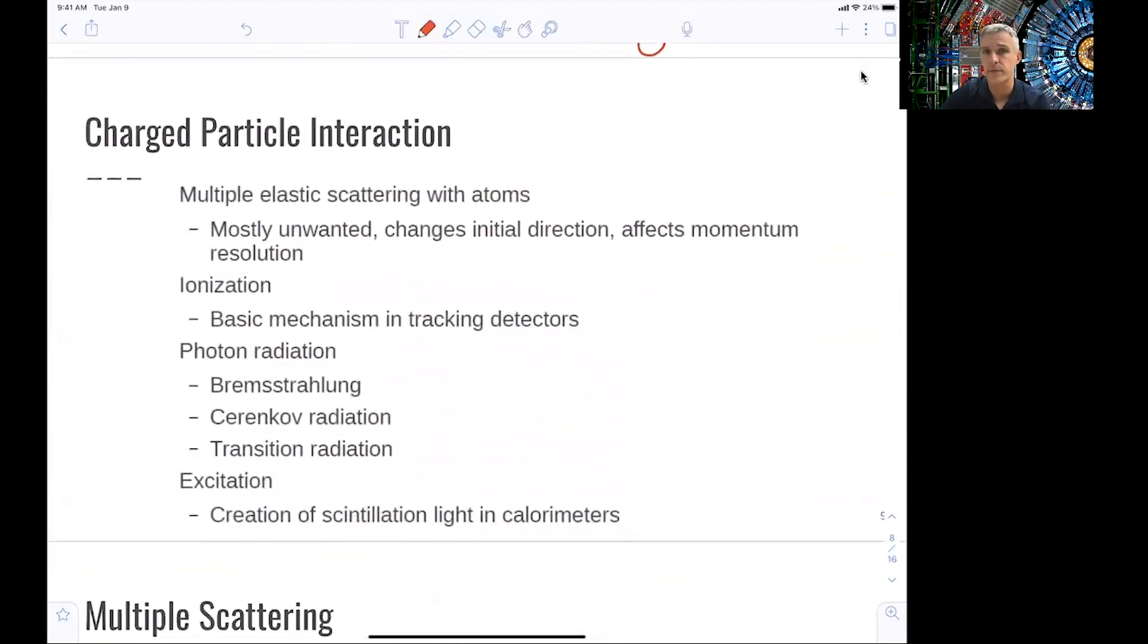So moving from the neutral particles, from the photons and electrons, to the charged particle interactions. Here, just summarizing or giving a summary first, and then going through the individual components. The interaction mechanisms are multiple scattering, elastic scattering with the atoms. This is a process which is not very much wanted, because when you try to monitor the trajectory of a particle, you don't want it to scatter and change randomly its direction or momentum. Ionization is a basic mechanism for tracking detectors. Photon radiation is an important part through bremsstrahlung, but also through Cherenkov radiation or transition radiation. And then in scintillators, you can excite the material. And if you have a wavelength shifting fiber material, you can cause scintillation light to be shifted in wavelengths, and then you can read this out in order to gain information about particles going through.